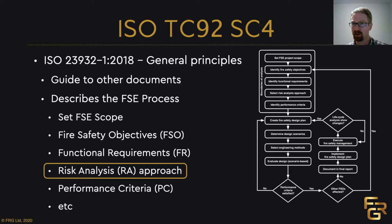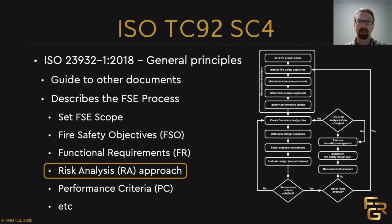You decide which fire safety objectives you're going to look at — life safety, cultural heritage, or firefighter safety. Then you specify your fire functional requirements — the specification of the fire safety objectives. If you're looking at life safety, a functional requirement might be: don't expose people to toxic products, smoke, soot, heat, radiation and so on. The next step in the flowchart is choosing your risk analysis approach. In this document we outline the different types of risk analysis approaches you can use, using the Pate-Cornell approach to describe them.